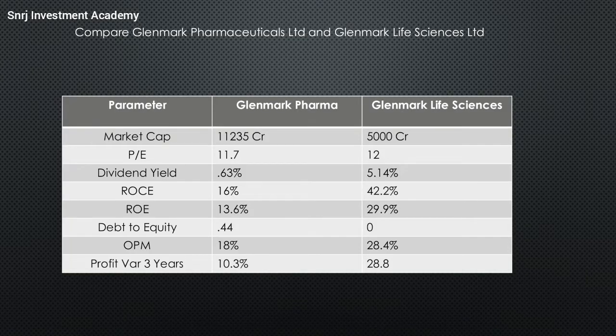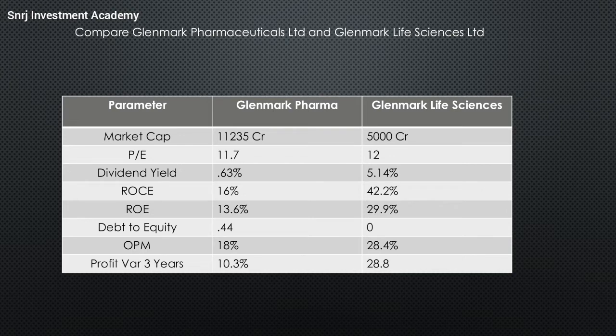Comparing key financial parameters: Glenmark Pharma has a market cap of approximately 11,235 crore, whereas Glenmark Life Sciences is a 5,000 crore company. The PE is similar — 11.7 for Glenmark Pharma and 12 for Glenmark Life Sciences. The dividend yield for Glenmark Pharma is only 0.63%, whereas Glenmark Life Sciences offers 5.14%. ROCE for Glenmark Life Sciences is 42.2% versus only 16% for Glenmark Pharma.